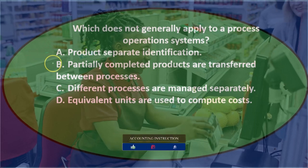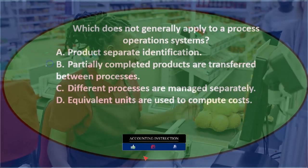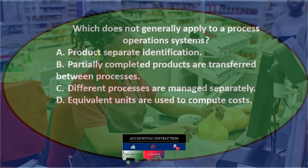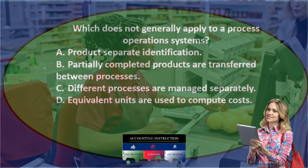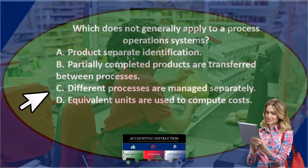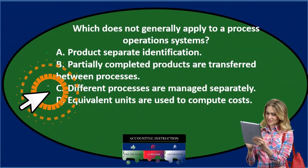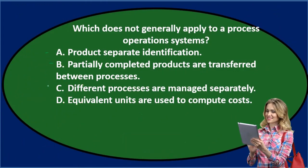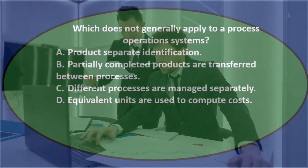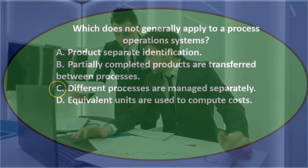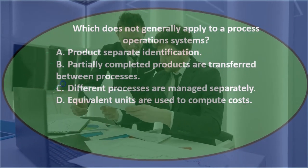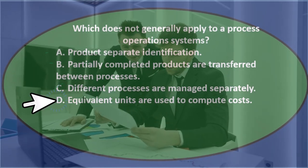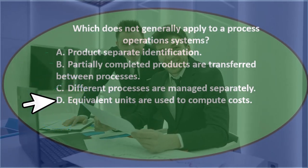Option B — partially completed products are transferred between processes — that's true under a process cost system, and it might be true under a job cost system as well, so I'll keep that one for now. Option C — different processes are managed separately — the emphasis is on 'processes,' so I would think that's part of a process cost system and can cross that one out.